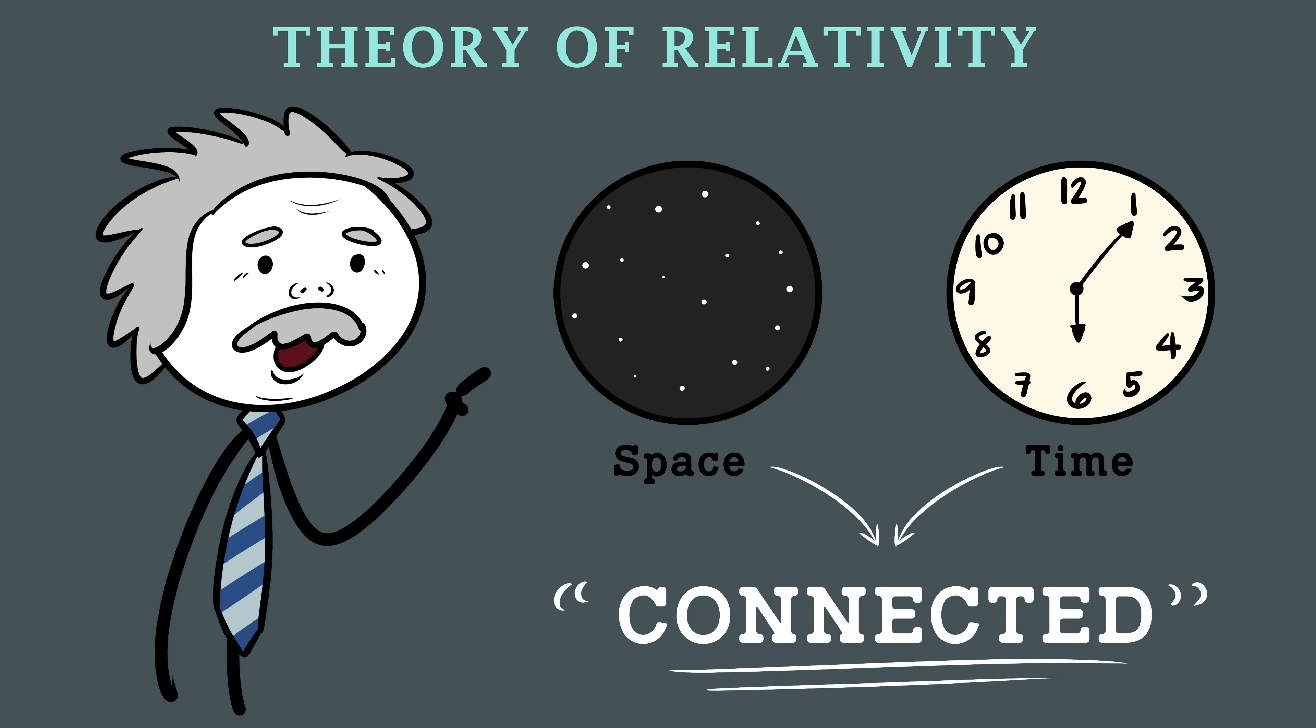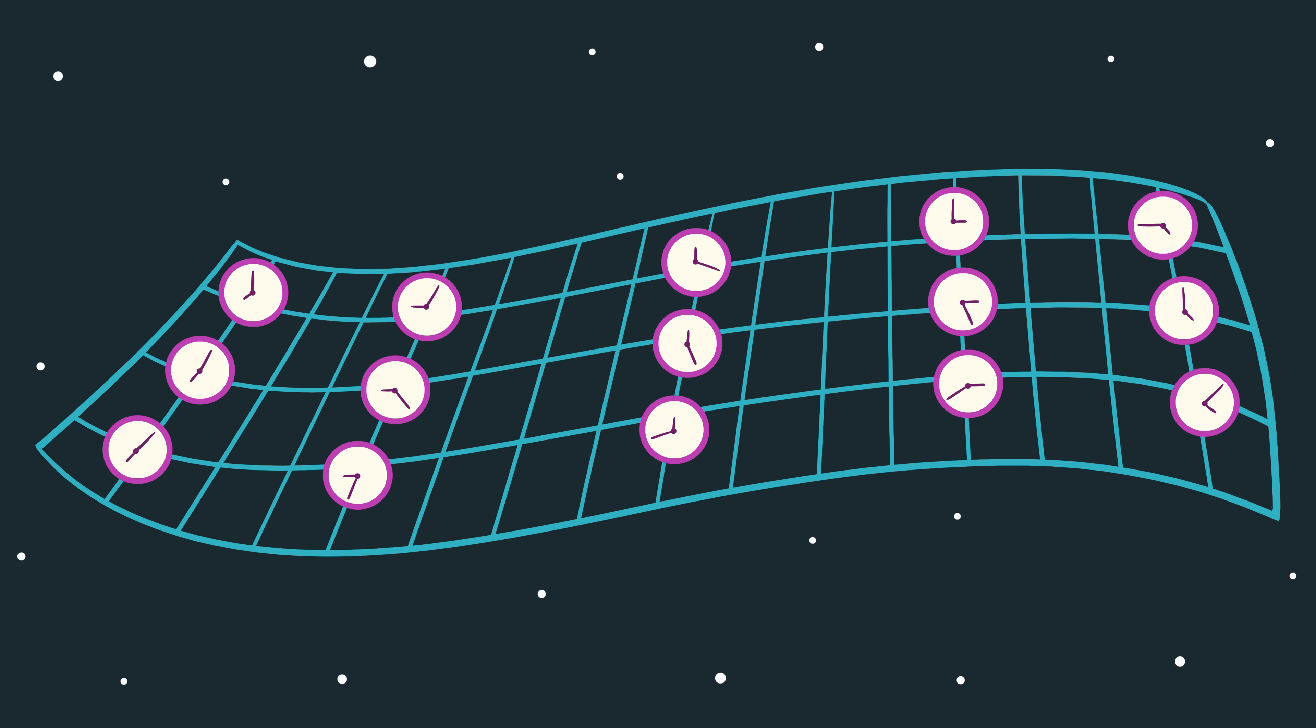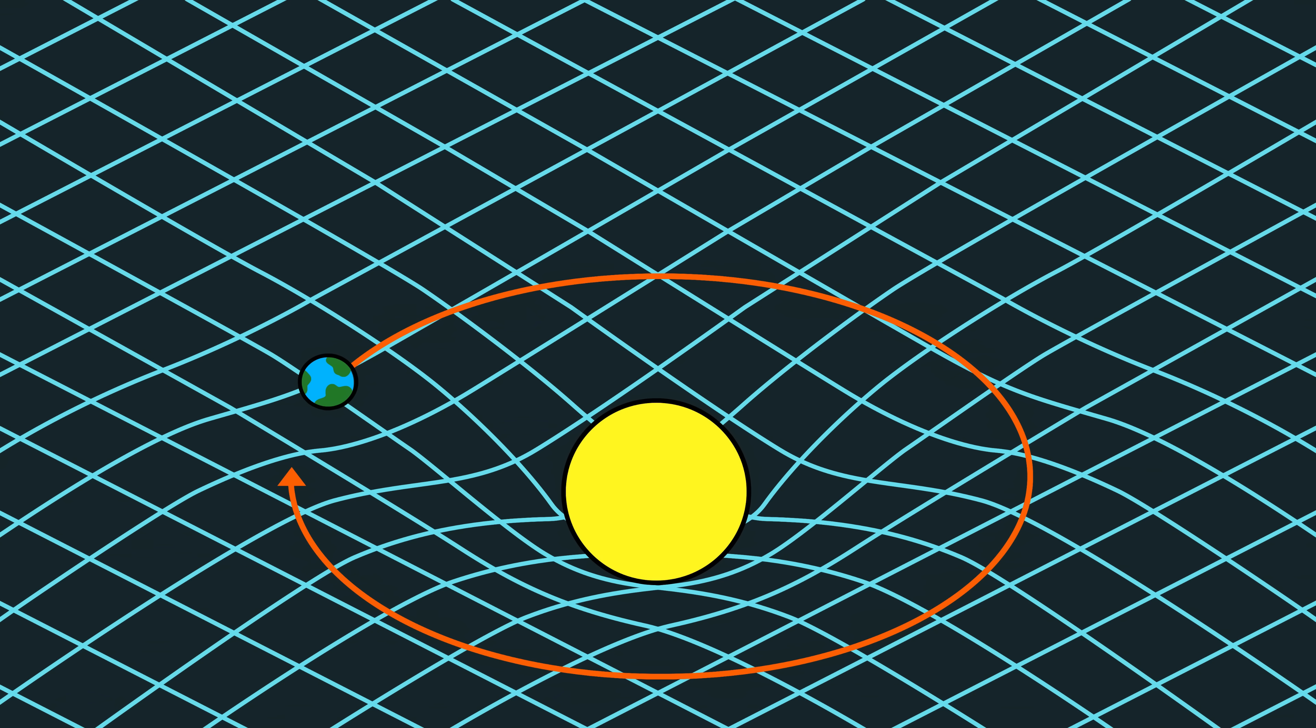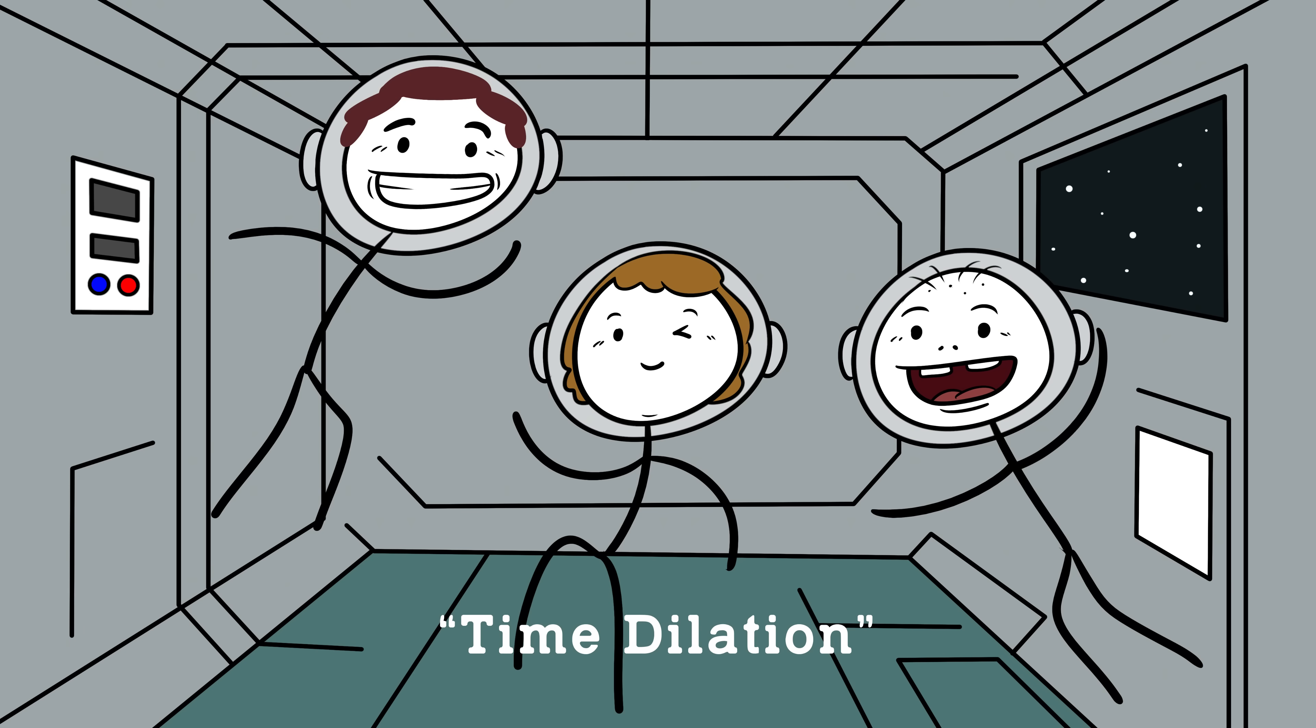In Einstein's theory of relativity, time isn't this steady ticking thing we think it is. It bends, it stretches, and it slows down depending on how fast you move or how close you are to a massive object. Astronauts on the International Space Station actually age a few milliseconds slower than us. Time literally moves differently. But that's not even the weird part.